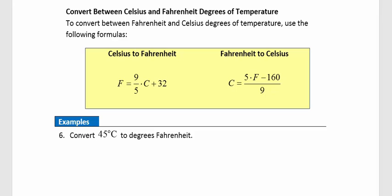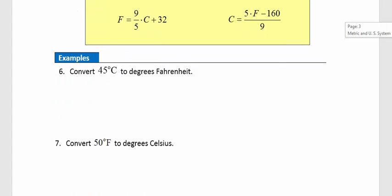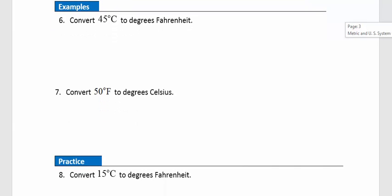Converting between Celsius and Fahrenheit: to convert Celsius to Fahrenheit, use the formula F = (9/5)C + 32. To convert Fahrenheit to Celsius, use C = 5(F − 160)/9. Let's look at examples 6 and 7.